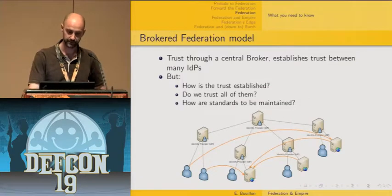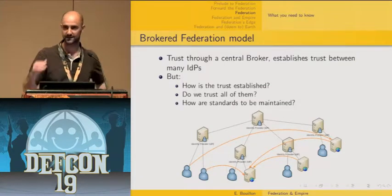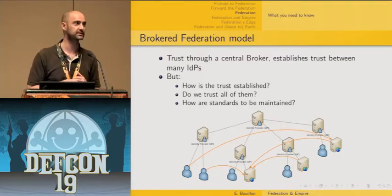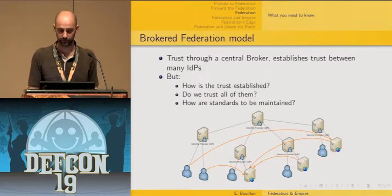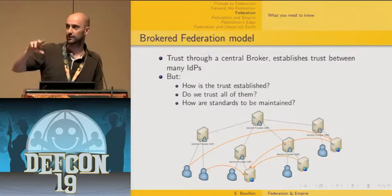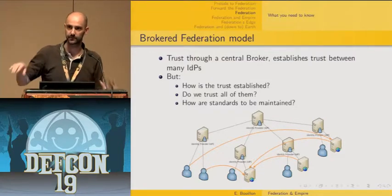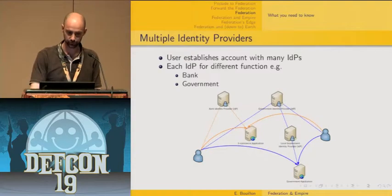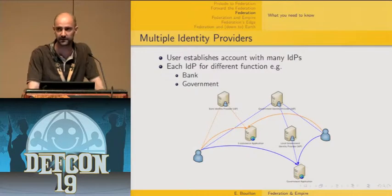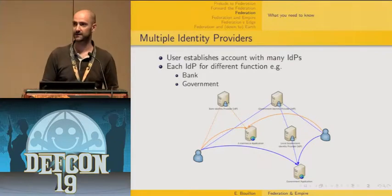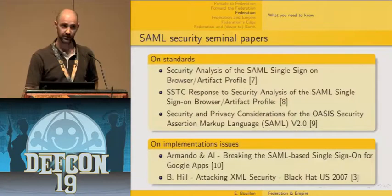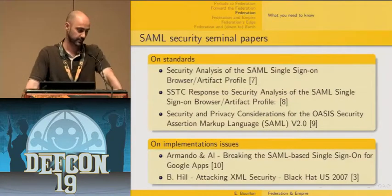The basic WS-Federation flow: the browser connects to a web application, which redirects to its own identity provider, which redirects to the user's identity provider. The user's IdP authenticates the user, retrieves attributes from an enterprise directory, builds and signs a claim, and sends it back via POST redirect to the web application's identity provider. That IdP verifies the signature, possibly adds or removes attributes, re-signs it, and sends it to the web application, which grants access accordingly. More complex architectures exist, like hub-and-spoke federation models with a centralized trusted identity provider.